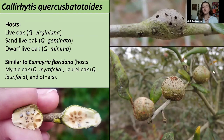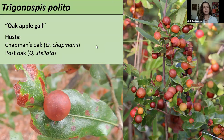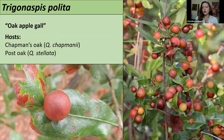Trigonaspis pollita has got to be the most beautiful gall out there — who doesn't want to put that on a Christmas wreath? Often called the oak apple gall, it's really only found on Chapman's oak around here. When these guys are ripe and ready to go, you'll definitely be able to see them easily because they're so bright and beautiful. They're often anchored on the tops of the leaf, usually right out of the mid vein where they get lots of circulation of nice sugary fluids. They can get about the size of a quarter.